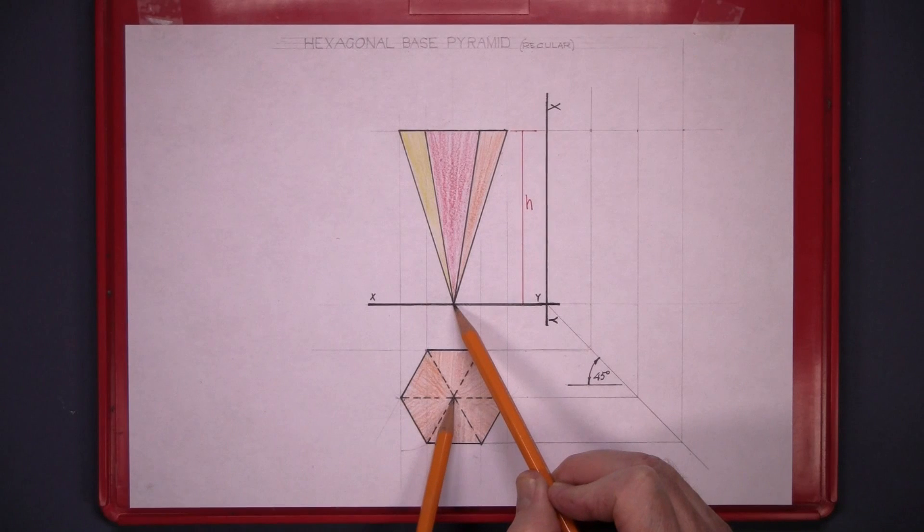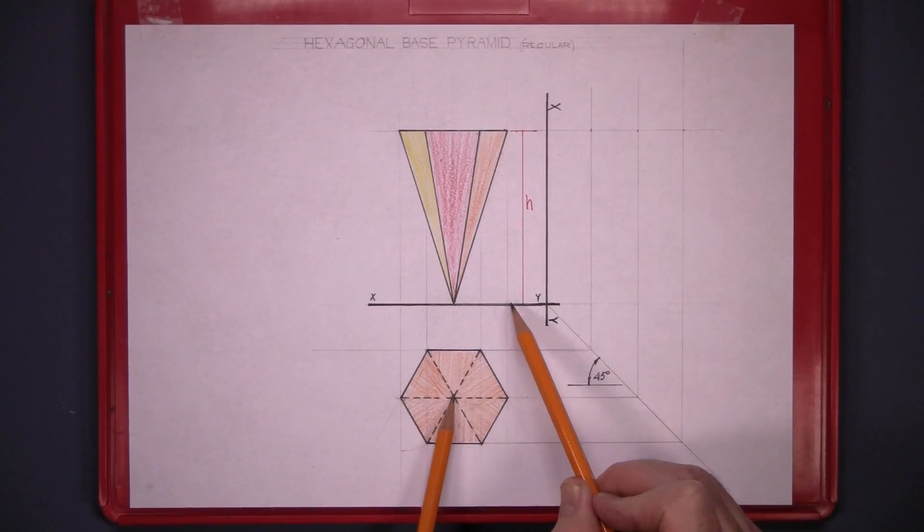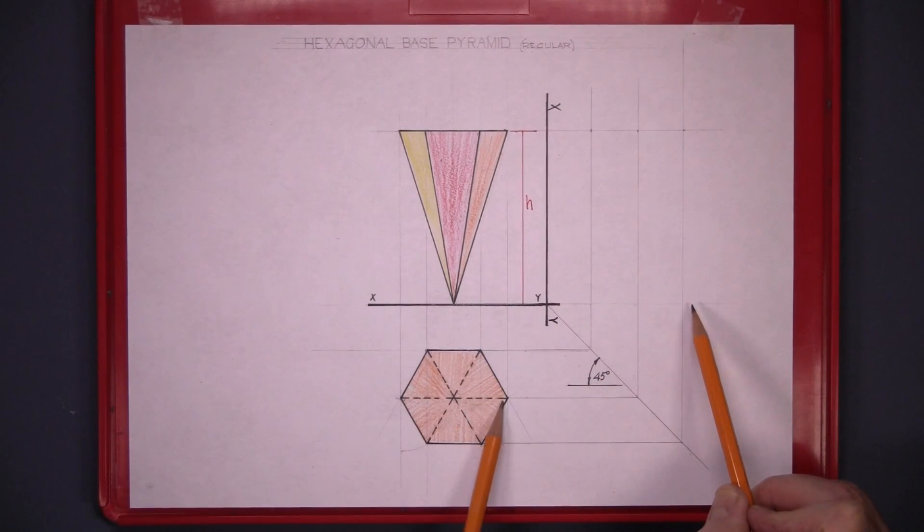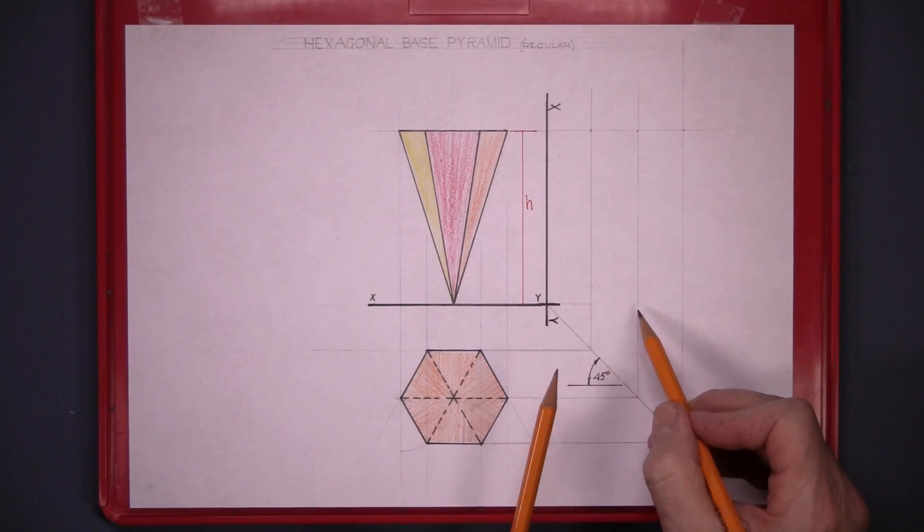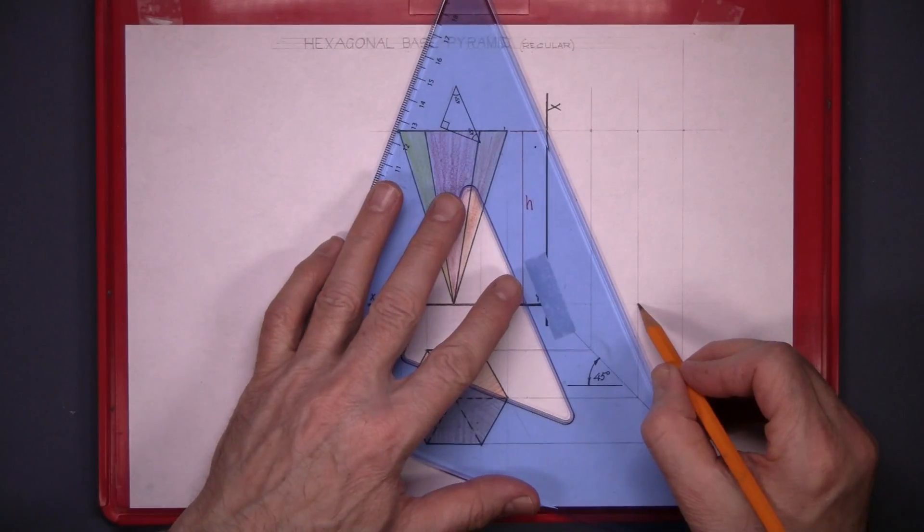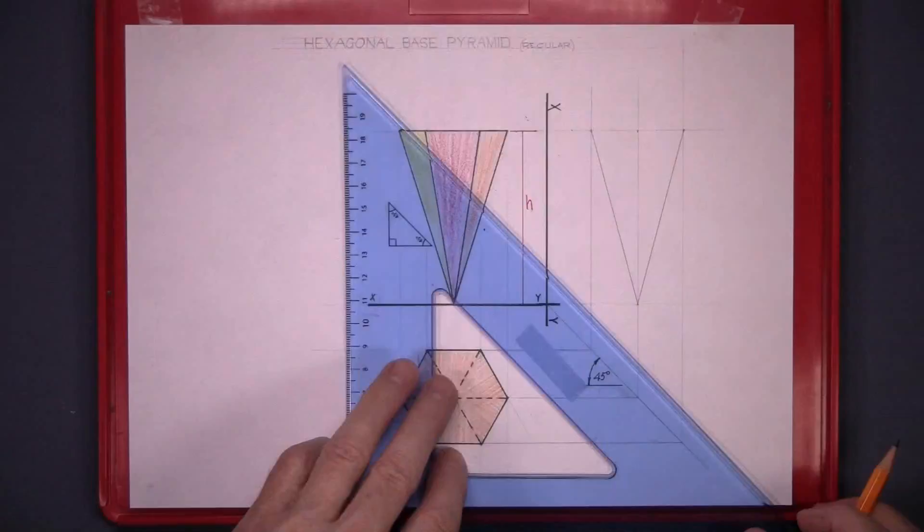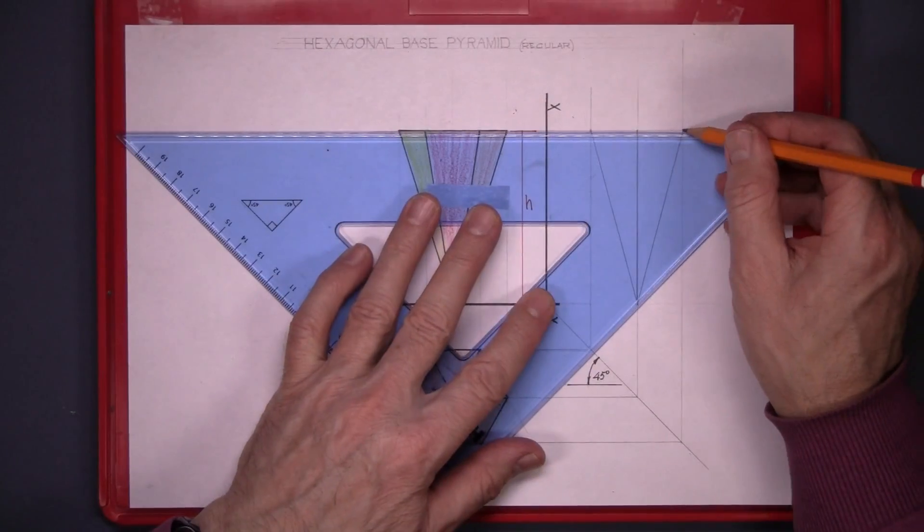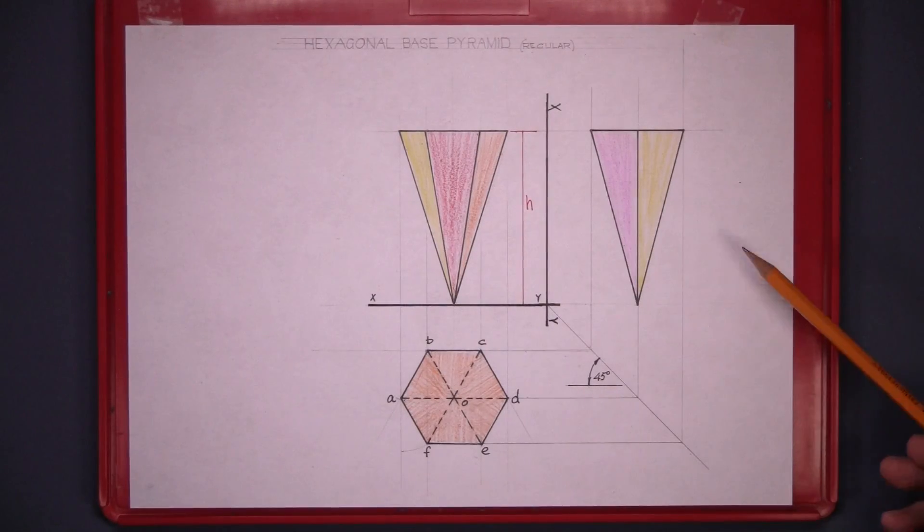The apex. Bring it across. It's on that bottom line and bring it across and that gets the center point. And now join those points up to get the end view. So you're just going to find the end view. And that's the end view complete.